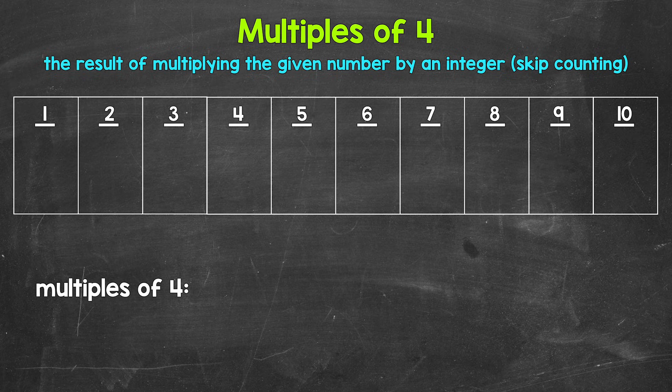Another way to think about multiples is to skip count. So all of the numbers something is going to hit when counting up by that number, those are all going to be multiples.